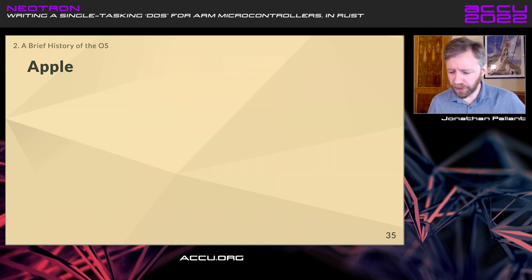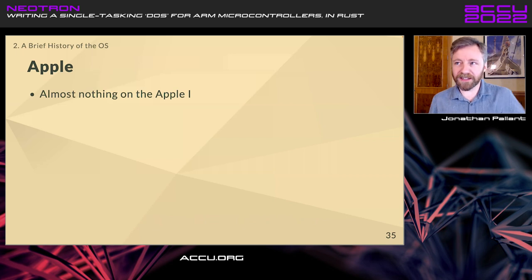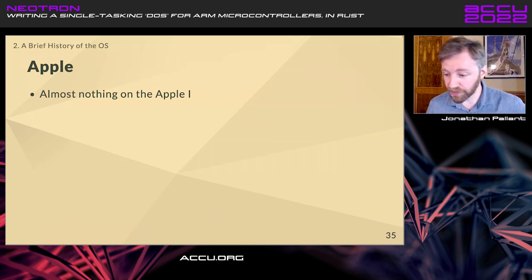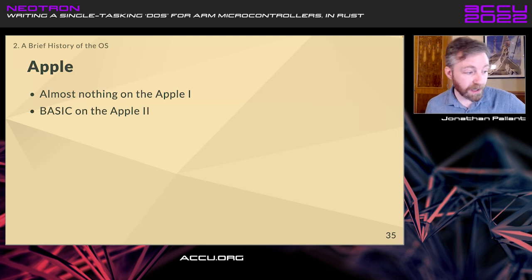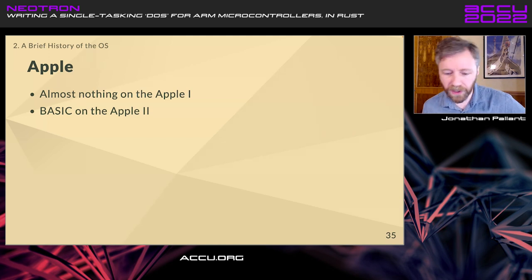Apple: the Apple I has 256 bytes of Wozmon - that's all. If you want Basic, you have to type machine code into Wozmon to load it from tape. With the Apple II you finally get Basic included - integer Basic, which Woz wrote. They eventually got the floating-point Basic from Microsoft. The Lisa OS is quite extraordinary for what they were able to do at the time - obviously borrowing the GUI from Xerox Star. However, the Lisa machine was unbelievably expensive and no one really bought it.